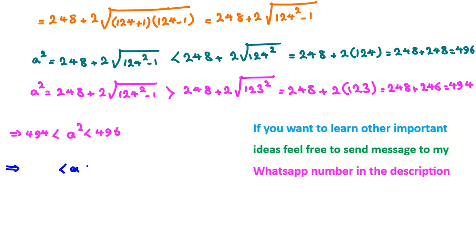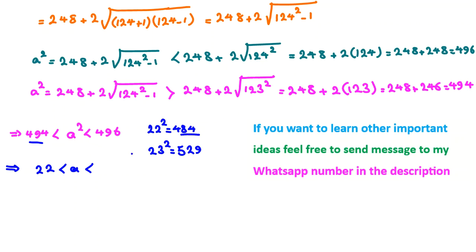From these bounds on A², we determine A is greater than 22 and less than 23, since 22² = 484 and 23² = 529, and our bounds on A² fall between these.